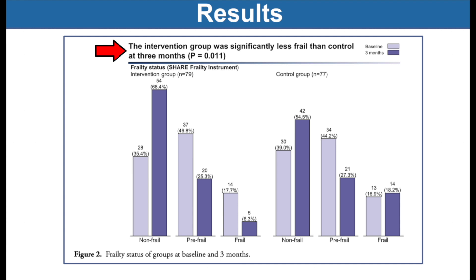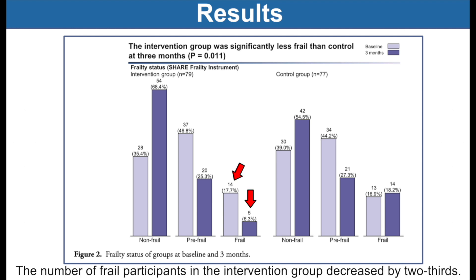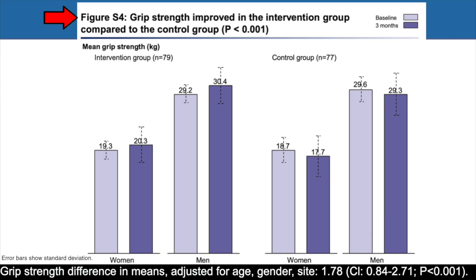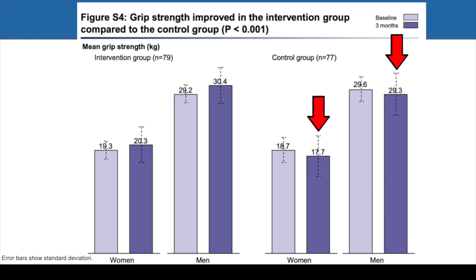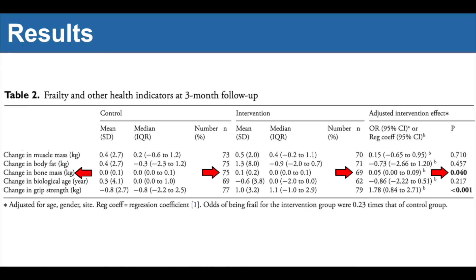Moving into the results: the risk of being frail at three months was significantly reduced in the intervention group relative to the control group. The number of frail participants in the intervention group decreased by two-thirds. Grip strength improved in the intervention group compared to the control group — at three-month follow-up, grip strength had increased in both women and men in the intervention group while it was slightly decreased in women and men in the control group. Muscle mass, body fat, and biological age also improved in the intervention group compared to the control group, though these were not statistically significant.